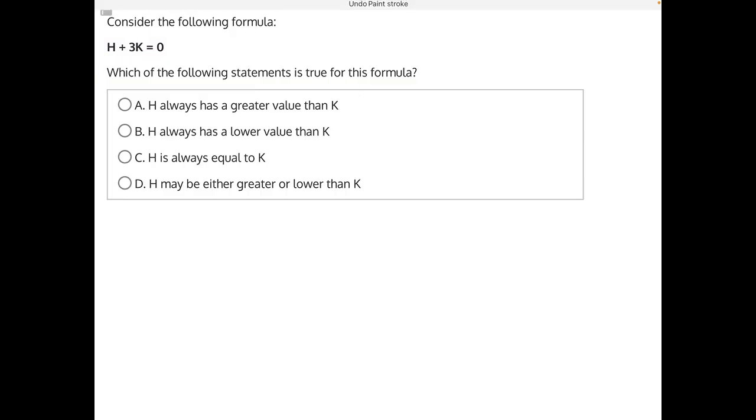We can pull this off to the side, and then use inverse operations to isolate h. 3k is being added to h, so the inverse operation is going to be subtracting 3k from both sides. These will cancel, leaving us with h is equal to negative 3k.